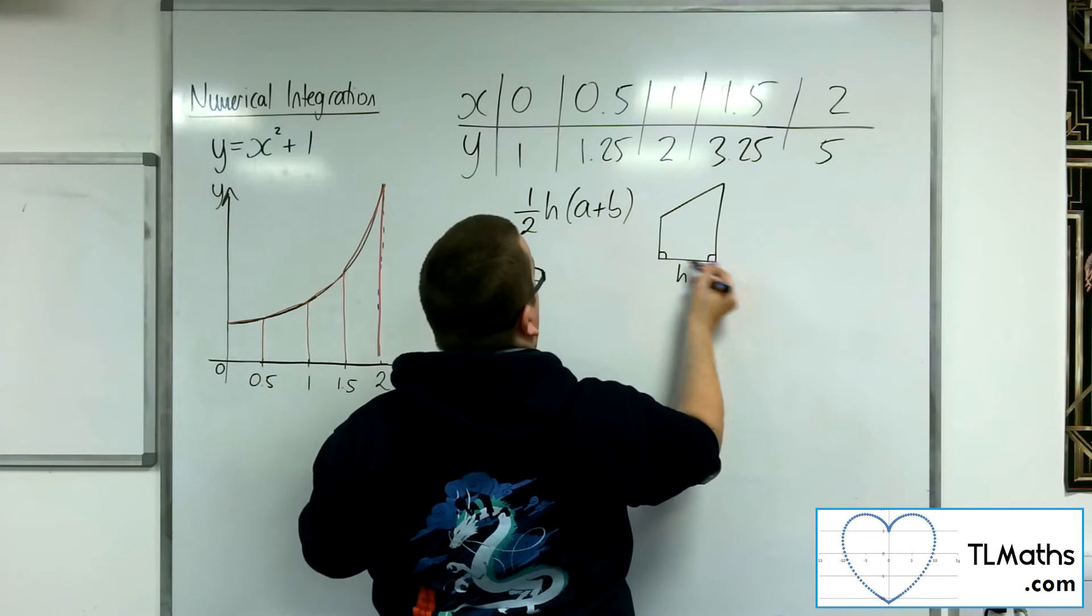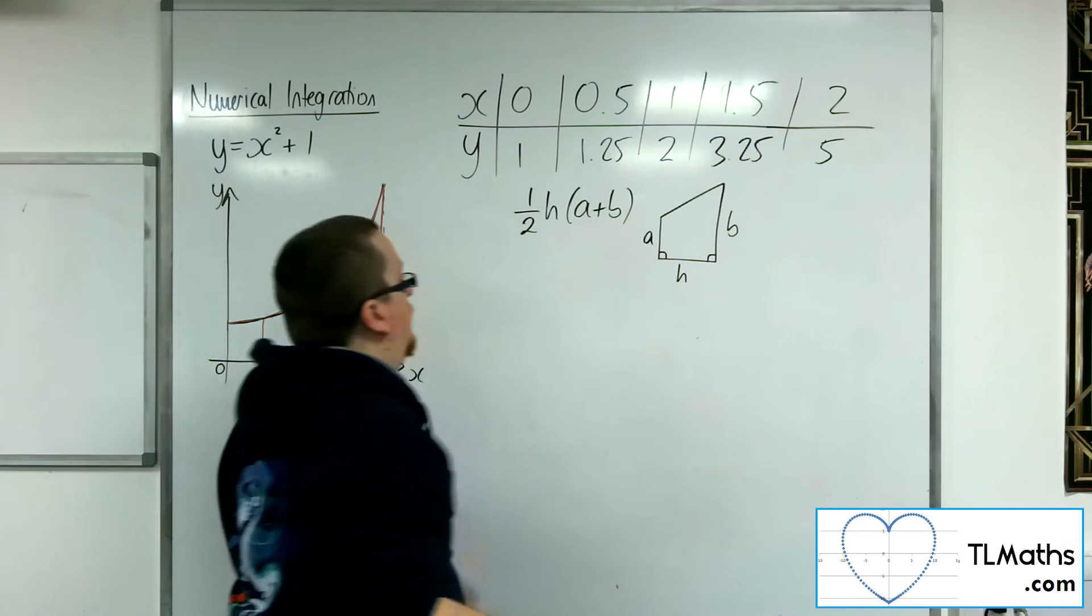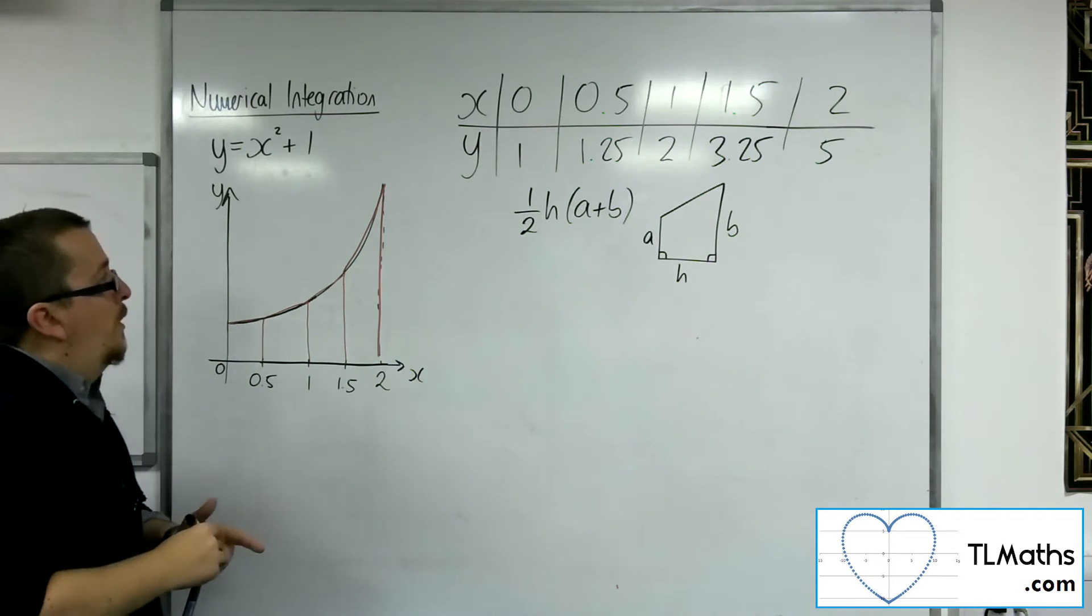This is h, the width of the strip, the height of the first side, the height of the second side. So what have we got?